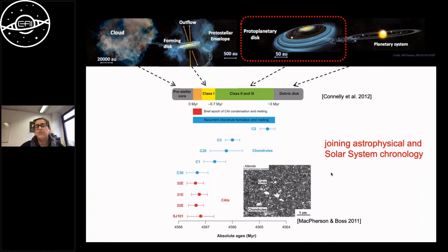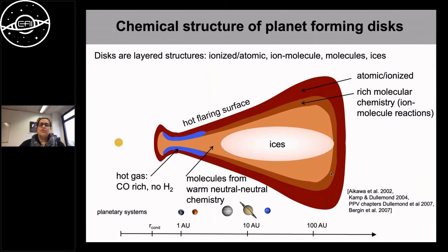What I want to focus on is the protoplanetary disk phase — where the first building blocks of planets have already formed and active planet formation is occurring. In the past ten-plus years we have gained a good theoretical understanding of what these disks look like chemically. They are molecular factories. This graph is very exaggerated in the vertical scale because in reality these disks are very flat, pancake-like structures.